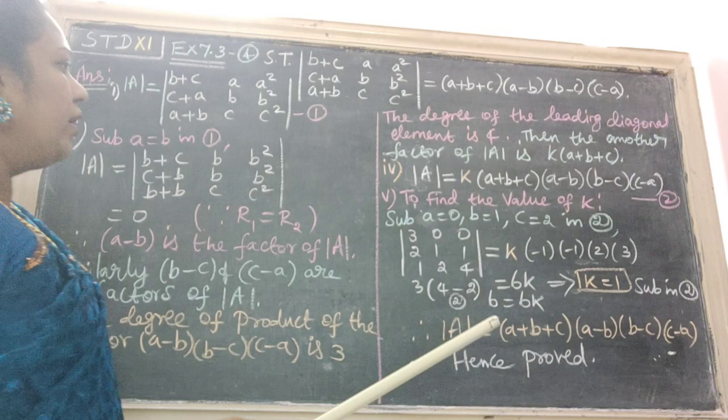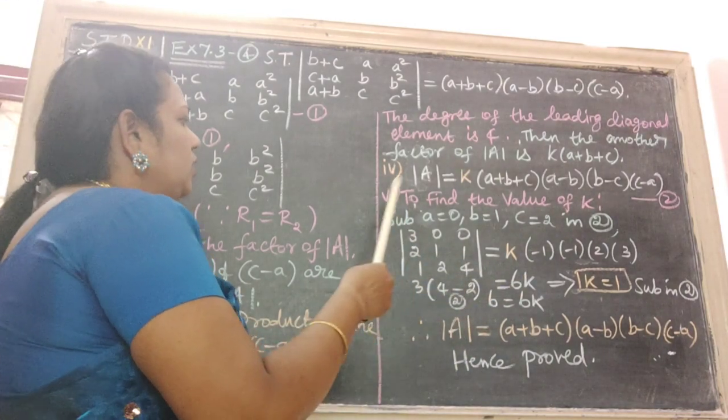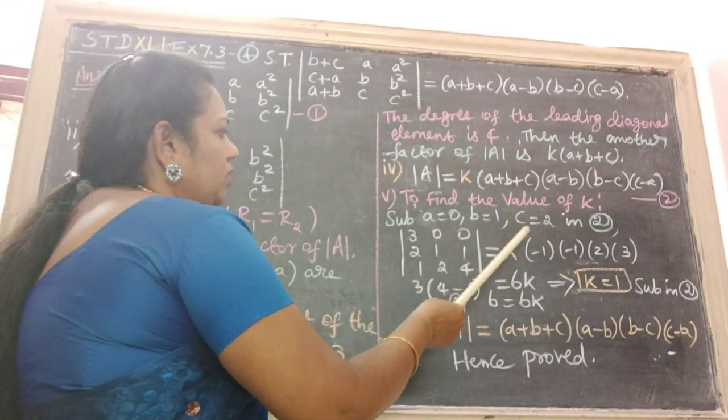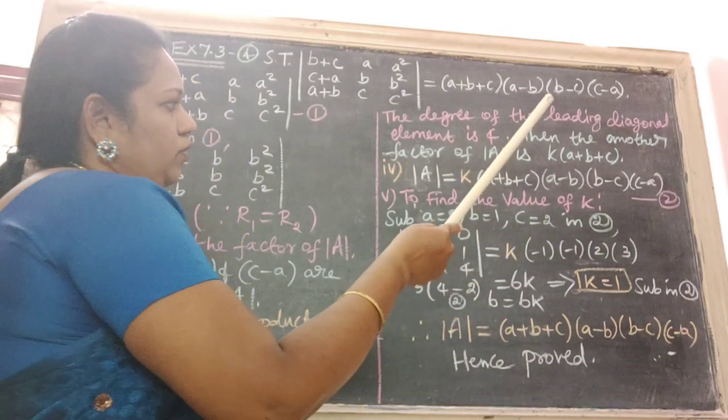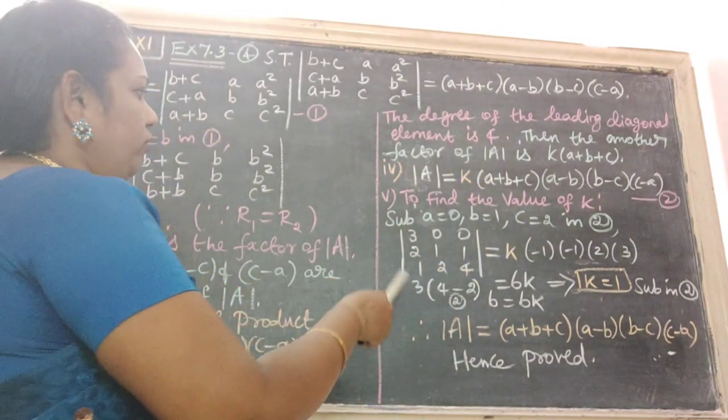Next step is to find the value of K. Then substitute A equal to 0, B equal to 1, C equal to 2 in equation number 2. Therefore, we get this.